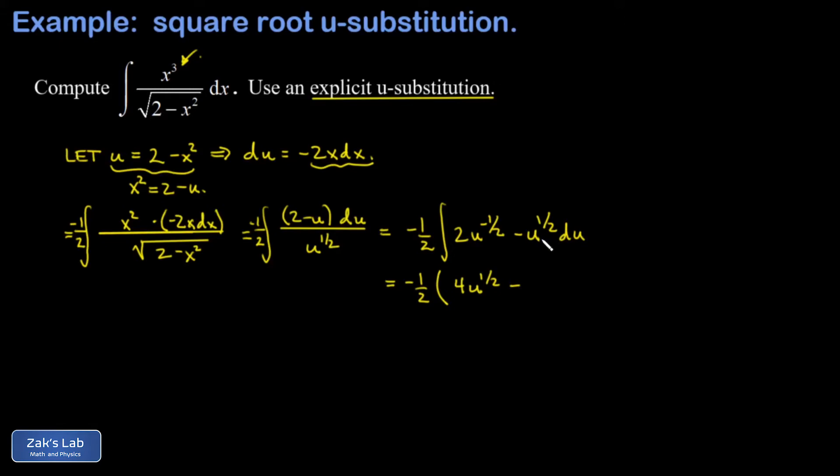The second term is u to the 3 halves divided by 3 halves, which is the same as multiplying by 2 thirds. So minus 2 thirds u to the 3 halves plus some arbitrary constant.